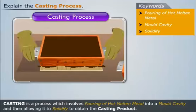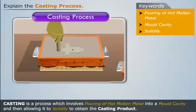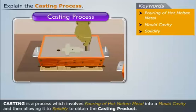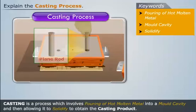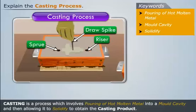Now place the cope and drag aside, then lift the cope and place it upside down. In this cope, make a tapered hole with the sprue cutter and a straight hole with the plain cylindrical rod. Note that the tapered hole is called the sprue and the straight hole is called the riser.